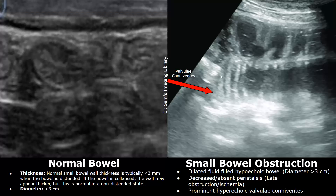Another feature often seen in small bowel obstruction is the hyperechoic prominent appearance of the valvulae conniventes — the intestinal folds. These intestinal folds appear hyperechoic and more prominent in small bowel obstruction; normally they are not very clearly seen.